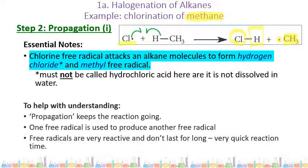Propagation means to keep the reaction going. One free radical in this step is used to produce another free radical — the chlorine free radical from step one undergoes a reaction and produces another free radical. Free radicals are very reactive and don't last very long, so this is a very fast reaction. In the length of time it takes to explain this, the reaction would have happened millions of times.